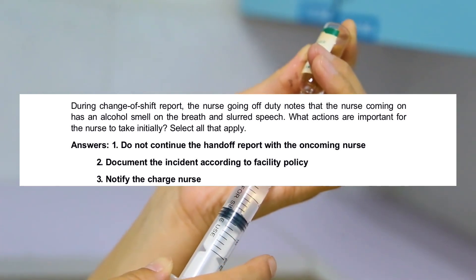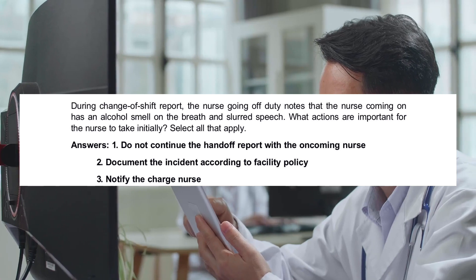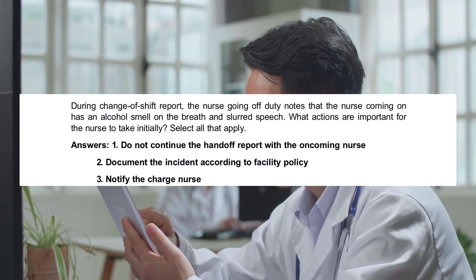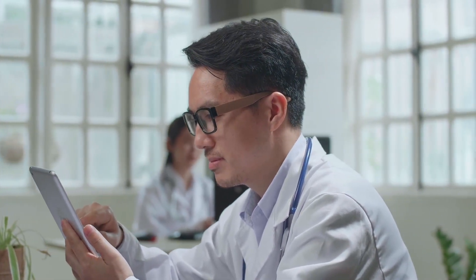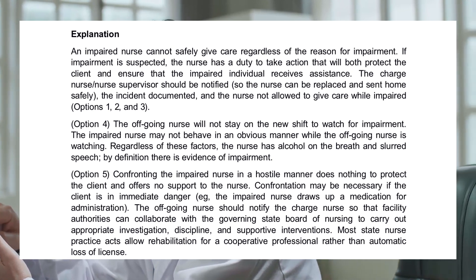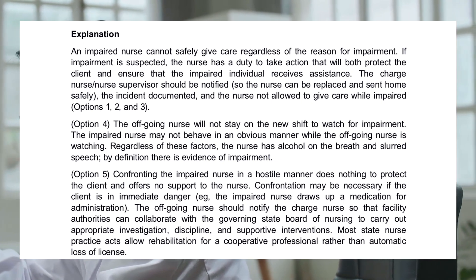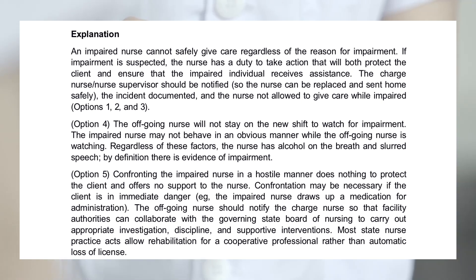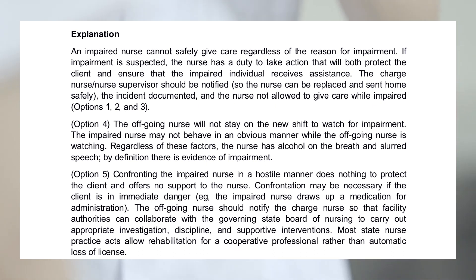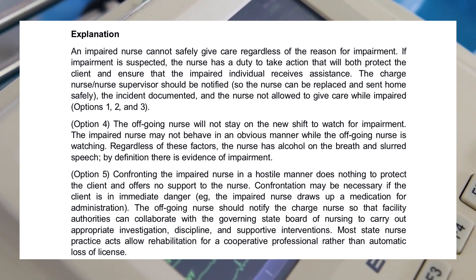The correct answers are: Do not continue the handoff report with the oncoming nurse; document the incident according to facility policy; and notify the charge nurse. An impaired nurse cannot safely give care regardless of the reason for impairment. If impairment is suspected, the nurse has a duty to take action that will both protect the client and ensure that the impaired individual receives assistance. The charge nurse or supervisor should be notified so the nurse can be replaced and sent home safely, the incident documented, and the nurse not allowed to give care while impaired.